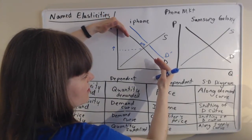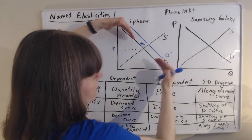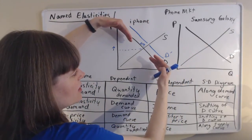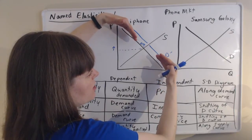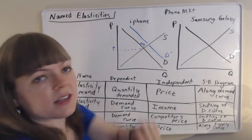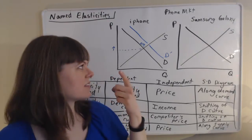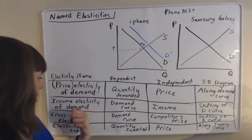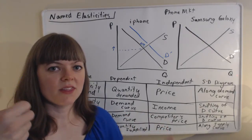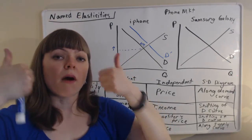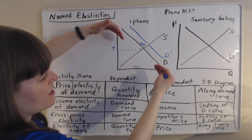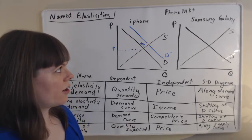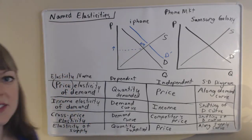So if that elasticity is really big, then we're going to have the demand curve shift out a whole lot when incomes go up. If that elasticity is really small, then the demand curve is only going to go up a little bit when people's incomes go up. So we know elasticity has two parts. It has direction and magnitude. The direction of the income elasticity of demand, when income goes up, the demand curve goes up. So it's a positive elasticity. And the magnitude of that elasticity depends on the kind of product out there. So that's income elasticity of demand.